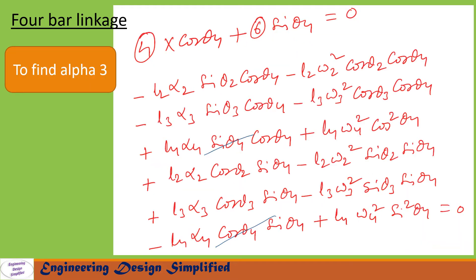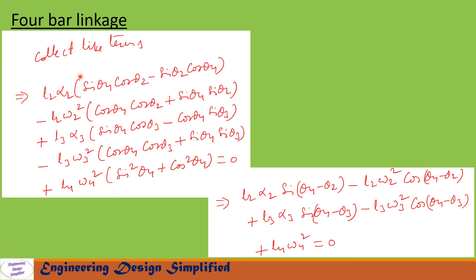To find α3, the angular acceleration of coupler link L3, we multiply Equation 4 by cosθ4 and add that to Equation 6 multiplied by sinθ4, and equate to zero. The terms L4·α4·sinθ4·cosθ4 and −L4·α4·cosθ4·sinθ4 cancel each other. After collecting like terms and rearranging, we get a simplified equation.